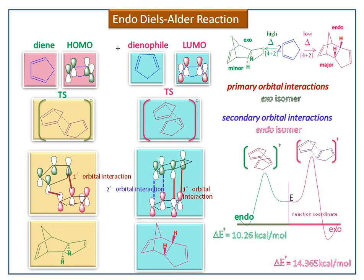Diels-Alder cycloaddition of cyclopentadiene gives the endo-favored product, which is the kinetic product, whereas the exo-adduct is the thermodynamic product. In the next video, we discuss CSIR problems based on the endo-Diels-Alder reaction. Thank you.